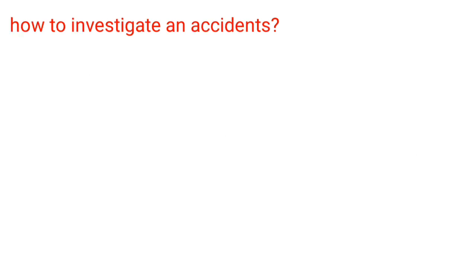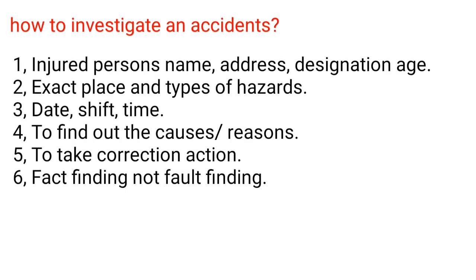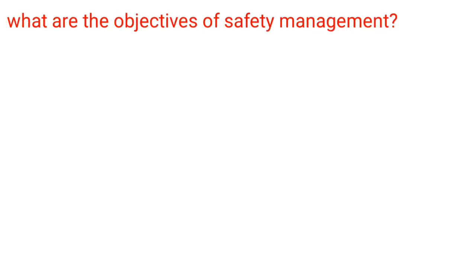How to investigate an accident? 1. Injured person's name, address, designation, and age. 2. Exact place and types of hazards. 3. Date, shift, and time. 4. To find out the causes and reasons. 5. To take corrective action. 6. Fact finding, not fault finding.